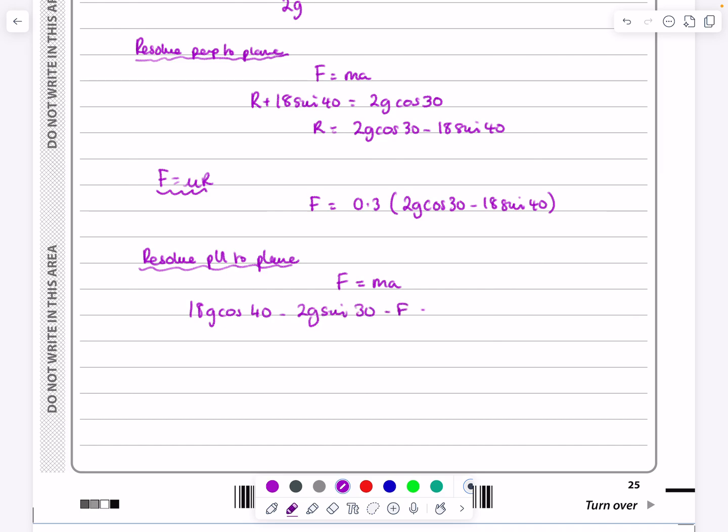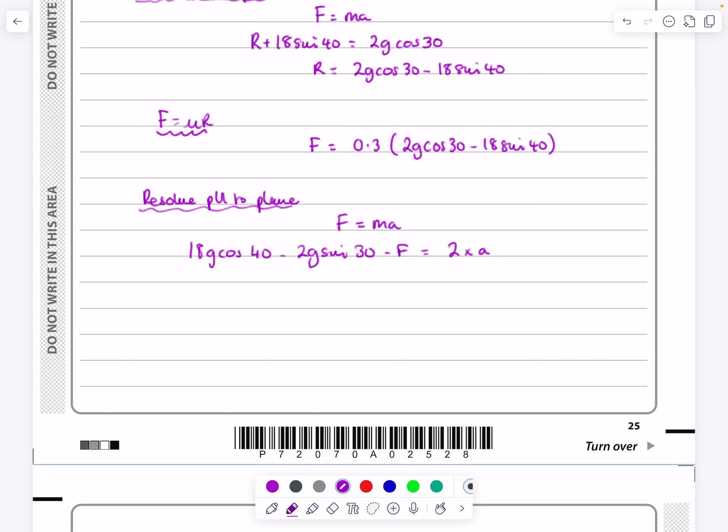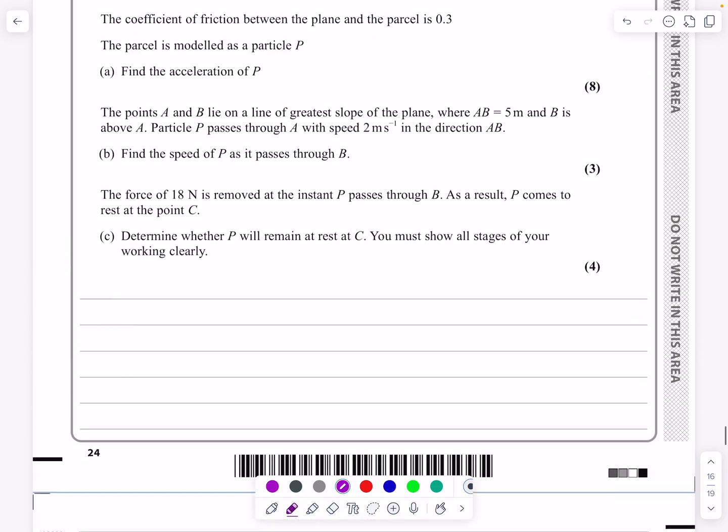Let's tell the examiner what we're doing. So resolve parallel to the plane. F equals ma. And as I said, the 18g cos is the bigger one. So 18g cos 40 minus 2g sin 30 minus f is equal to mass times acceleration. I'm going to replace f now. So I've got 18g cos 40 minus 2g sin 30 minus this bit that we had previously, 0.3 times 2g cos 30 minus 18 sin 40 is all equal to two times acceleration.